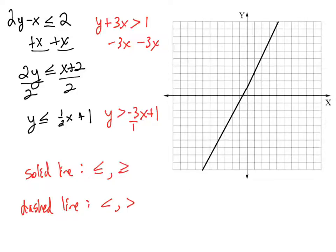It's kind of similar to how on a one-variable inequality we use brackets when it's greater than and equal to or less than and equal to. And then we use parentheses when it's less than or greater than.